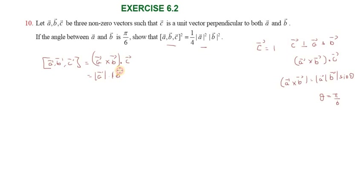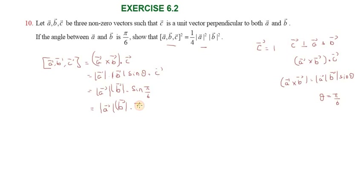Now, A vector cross B vector equals the magnitude of A vector into the magnitude of B vector into sin theta, into C vector. Since C vector is a unit vector, its value is 1. So A vector cross B vector dot C vector equals magnitude of A vector into magnitude of B vector into sin(pi/6). Since sin(pi/6) equals sin 30 degrees equals 1 by 2, we get: A vector, B vector, C vector equals 1 by 2 into magnitude of A vector into magnitude of B vector.